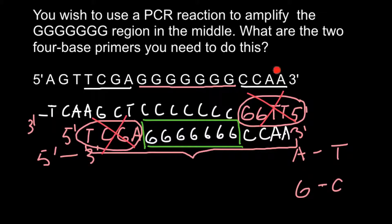We don't use these flanking regions in order to amplify this segment. The correct first primer would be cytosine, cytosine, cytosine, cytosine, cytosine — which anneals to this fragment, so that fragment is excluded from our final product. The second primer would be guanine, guanine, guanine, guanine, guanine, guanine. As you remember, we have the 5' end here.